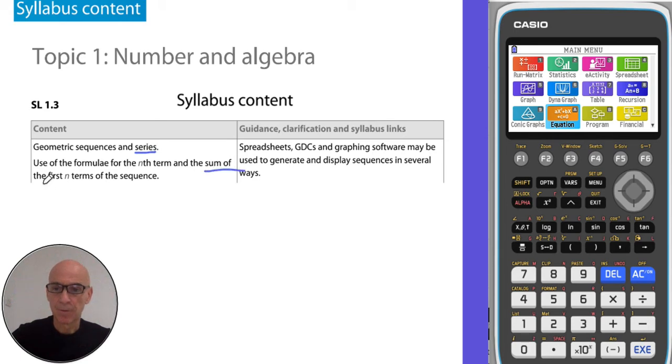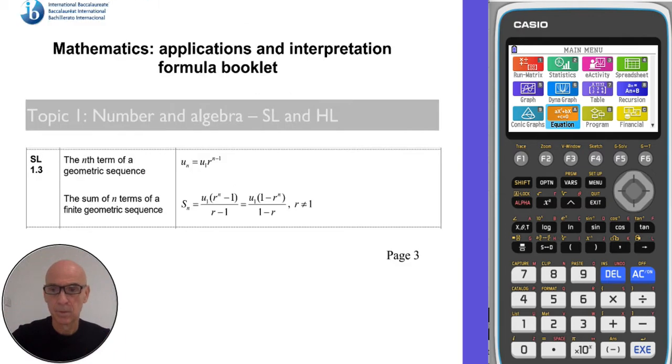The sum of the first n terms of a geometric sequence. The two versions of the formula are given on page three of your formula booklet.